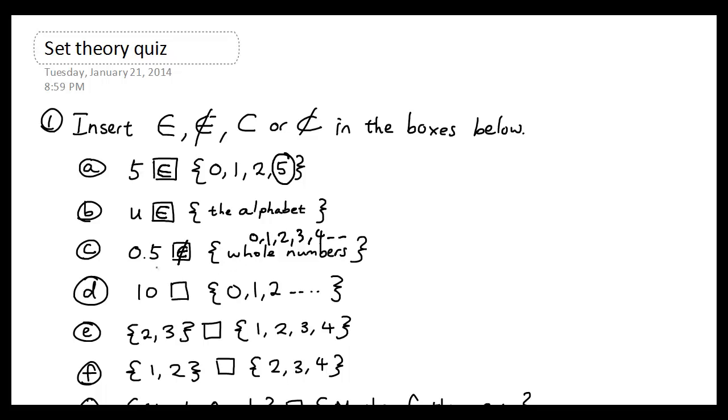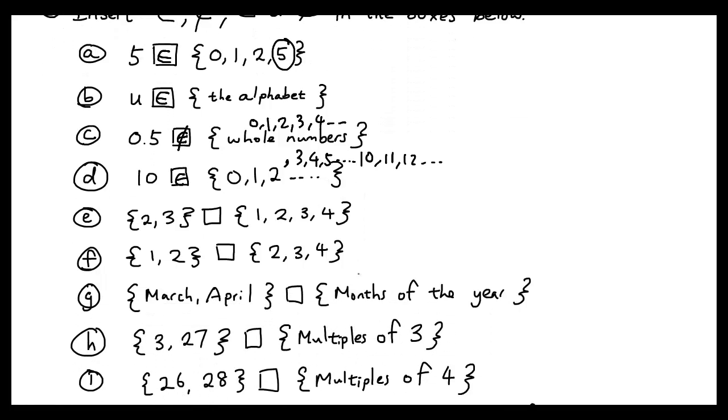Question D: is 10 in the set {0, 1, 2, ...}? Now remember, when we have dot-dot-dot, it means we will keep going forever in this same pattern. So the pattern is we're increasing by one every time—it's going to have 3, 4, 5, and eventually it'll get to 10, 11, 12, and so on. So therefore, 10 is an element of this set.